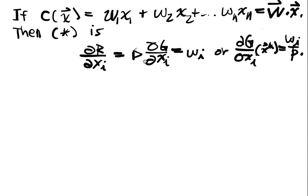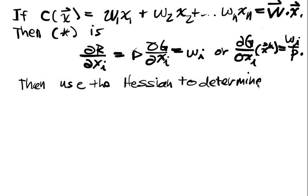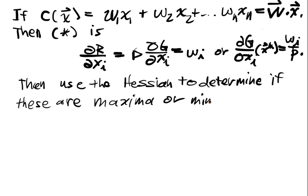That's great. So we get these nice conditions, and then we can go back and verify what are the points where this happens. And we can examine them and then use the Hessian to determine if these are maxima or minima. And that would be the basic game that we would play.